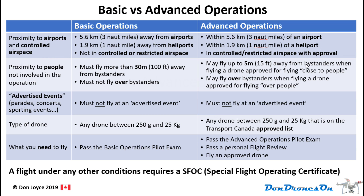We'll get into that in the advanced operations video. In terms of proximity to people, it is important to distinguish between bystanders and people who are involved in the operation. To be involved in the operation, you are either the pilot, a member of the crew such as a visual observer, or someone distinctly involved in your operation but not a crew member — for example, a family member who knows you are droning, or a friend or client in a commercial operation. Bystanders must be more than 30 meters away from your drone at all times, meaning you must not fly over bystanders. That 30 meters is horizontal at all altitudes.